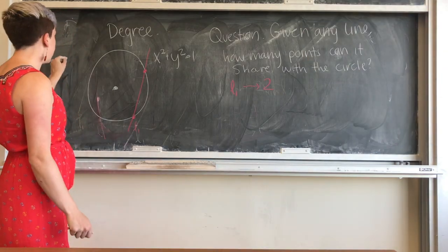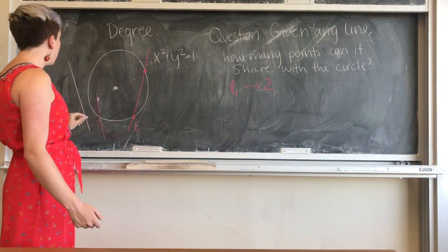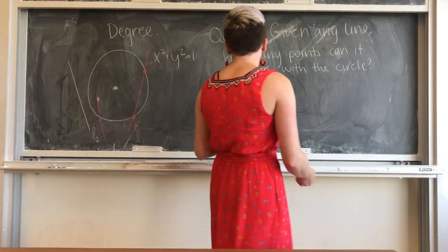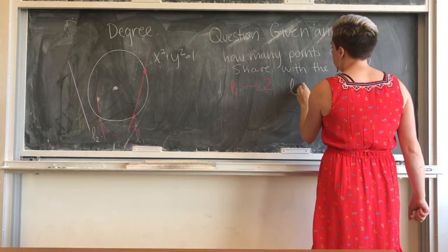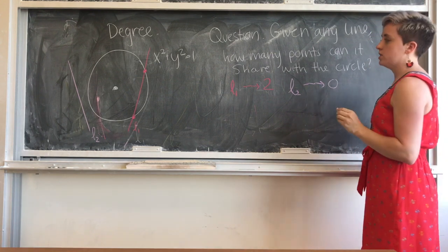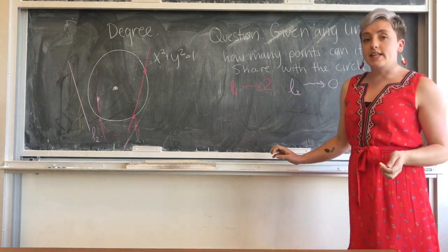Another thing that could happen is that the line doesn't meet the circle at all. I'll call that one L2. In this case, L2 shares zero points with the circle.